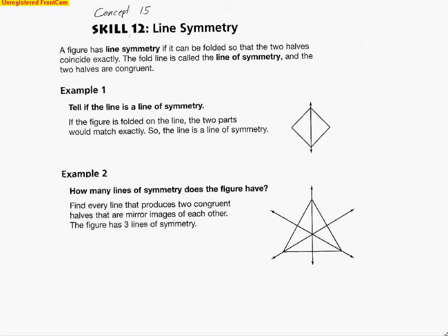This is the tutorial for Concept 15, Skill 12, and we're taking a look at a line of symmetry. Remember when we dealt with Skill 11, we talked about reflections and how there was a mirror image. Well, it's kind of like that on this one here. A line of symmetry is kind of like a mirror image. Because if you take a line of symmetry and you fold right along this diagonal of this square, the two halves should match up perfectly. And that would be a line of symmetry.